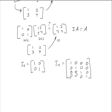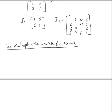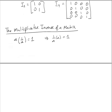Now that we know what the multiplicative identity matrix is, the next question is how do we find the multiplicative inverse of a matrix? For real numbers, if we take some number a and multiply it by 1/a, we get one back — that's the multiplicative inverse. We want to discuss this concept in terms of square matrices.